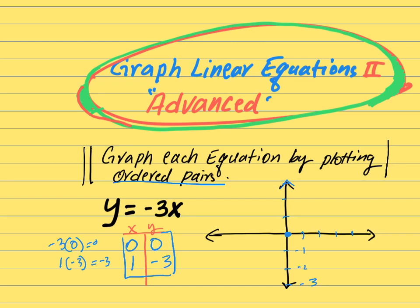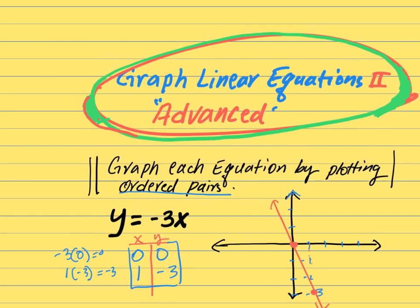So 0 is equal to 0, and 1 is equal to minus 3. If you look at x equals 1, we get (1, minus 3). This is y equals minus 3x. That is what we are doing — graphing y equals minus 3x by plotting those ordered pairs.